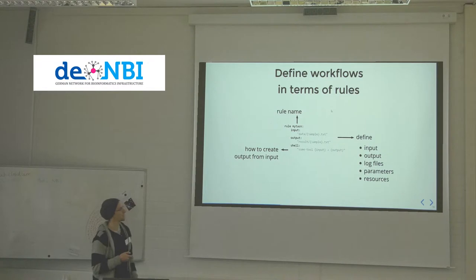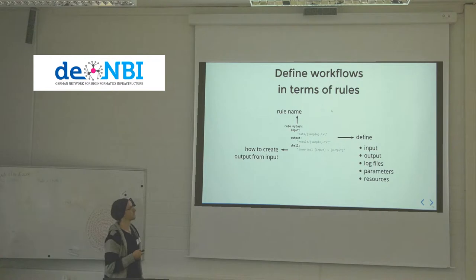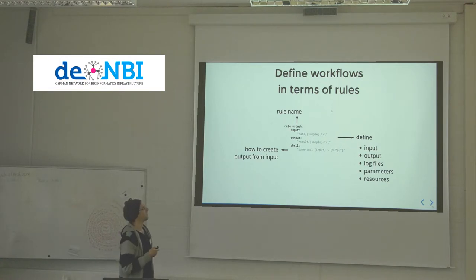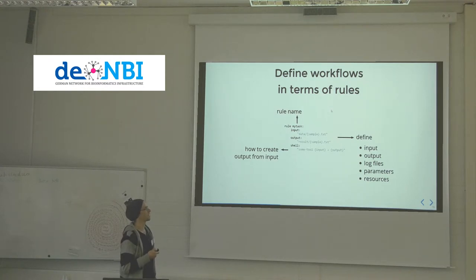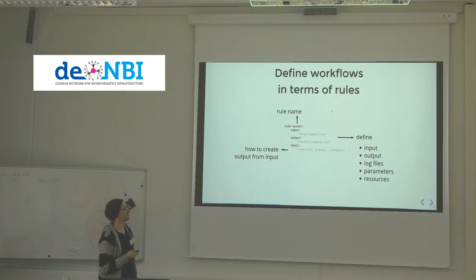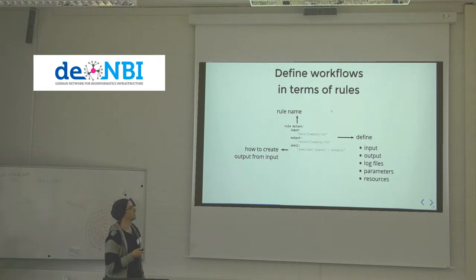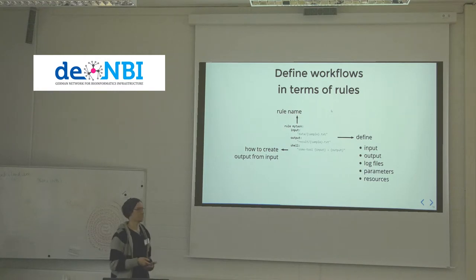Rules can be defined in Snakemake in a very simple textual way, containing only the information they should deliver. Every rule has its name, one or more input files, one or more output files, and for example a shell command that describes how to obtain the output from the input. Input and output files can contain wildcards, and thereby rules are generalizable across samples, parameters, or any combination thereof.